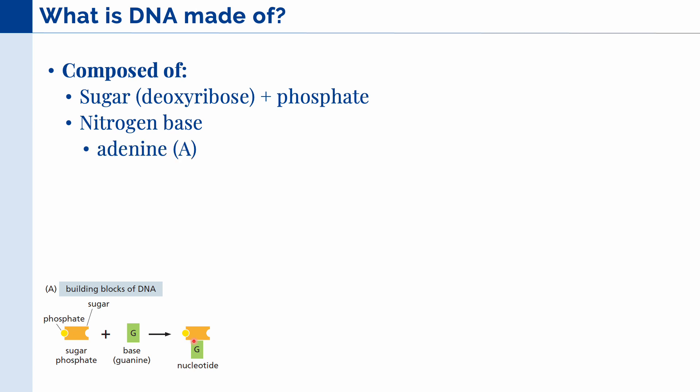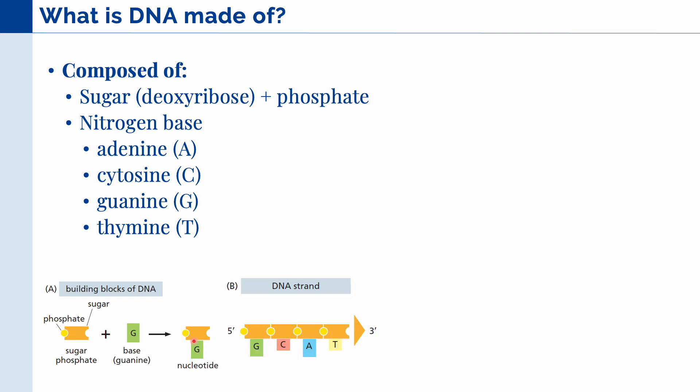There are four nitrogenous bases that are used in DNA, namely adenine, abbreviated by A, cytosine, abbreviated by C, guanine, abbreviated by G, and thymine. Together, these nucleotides come to form a DNA strand, which you can see here at the bottom.